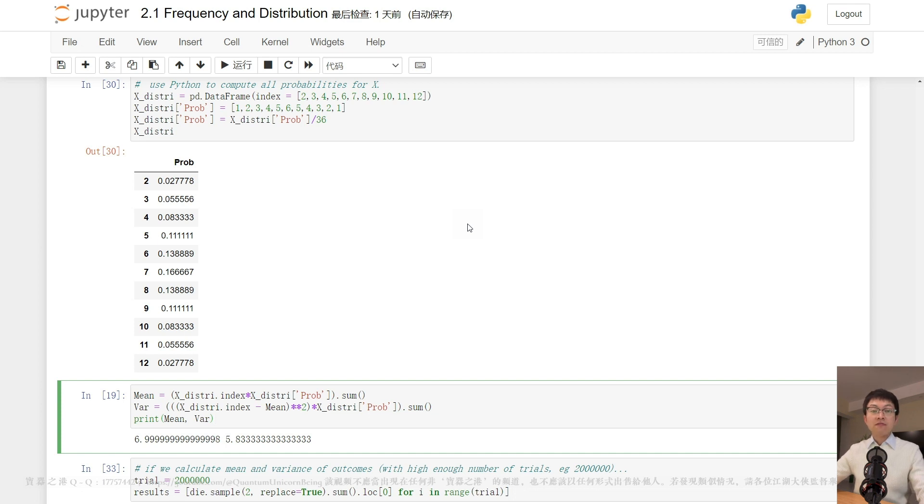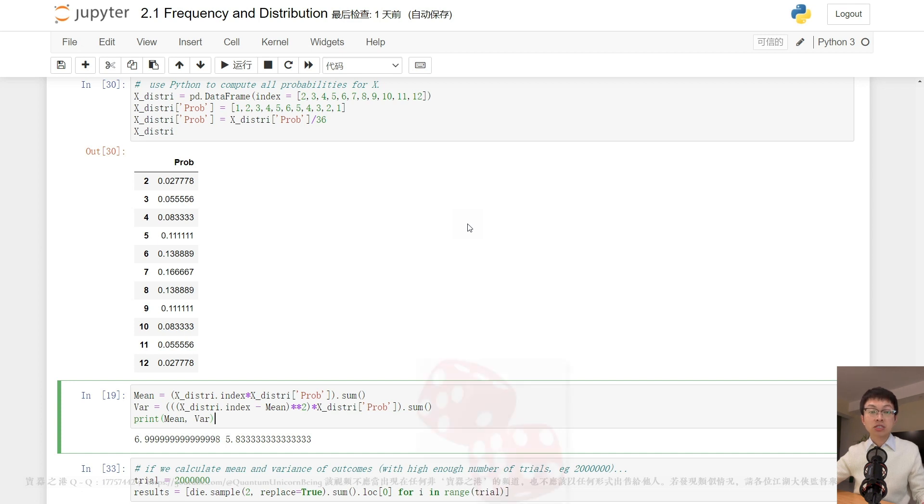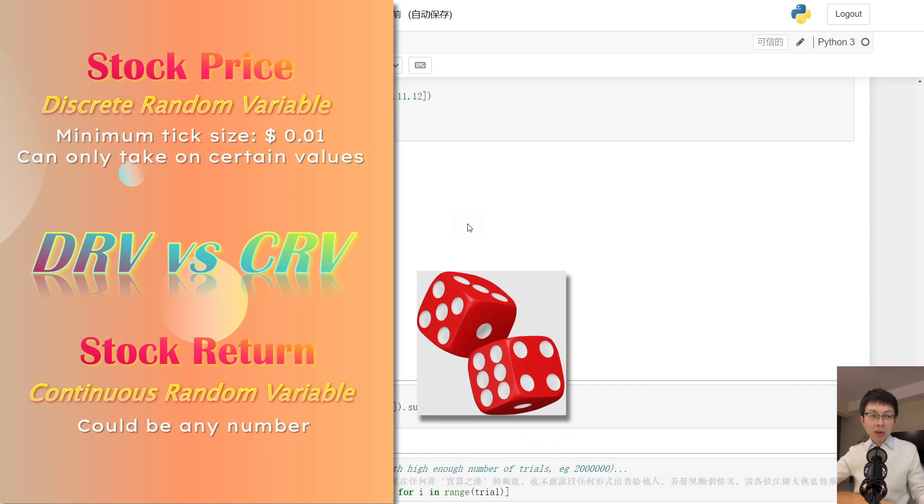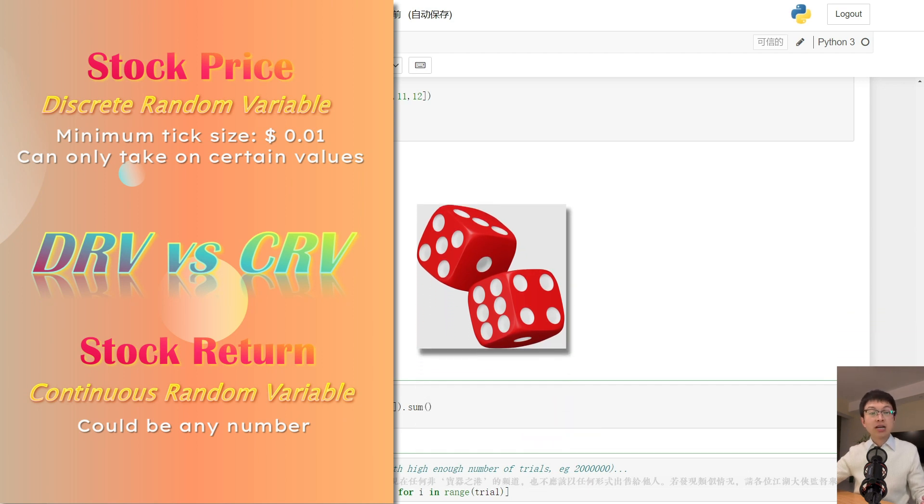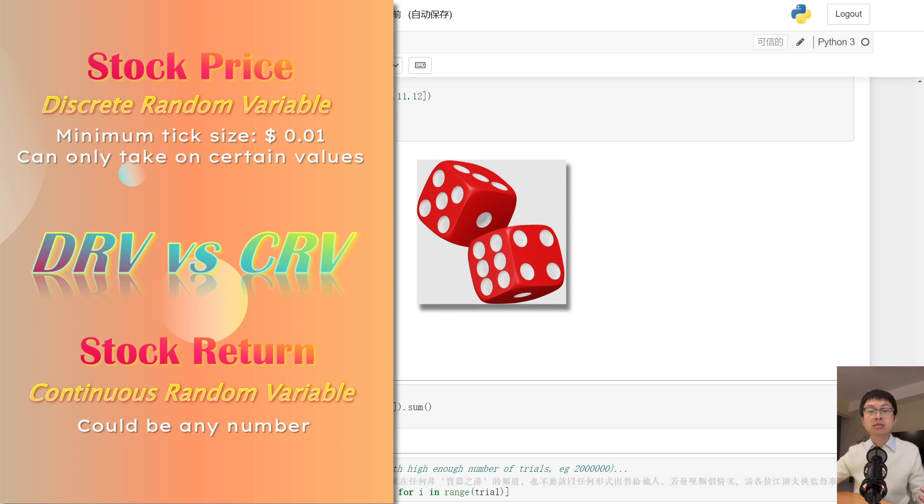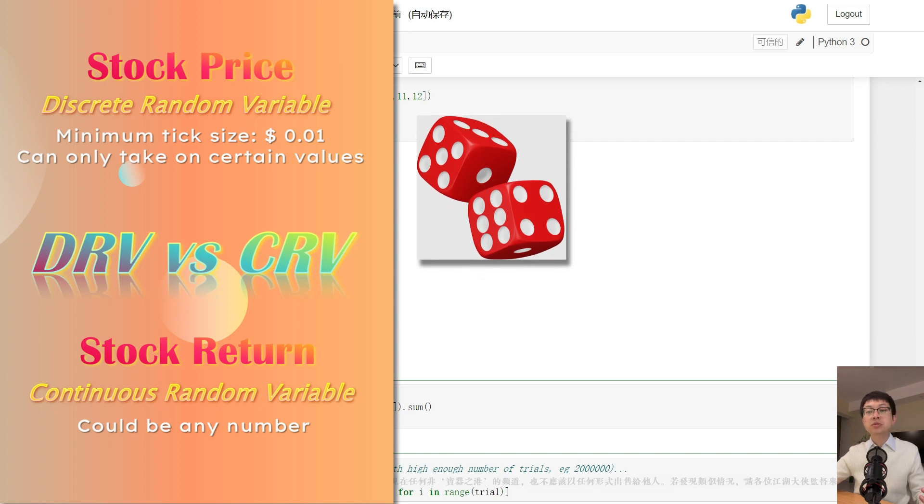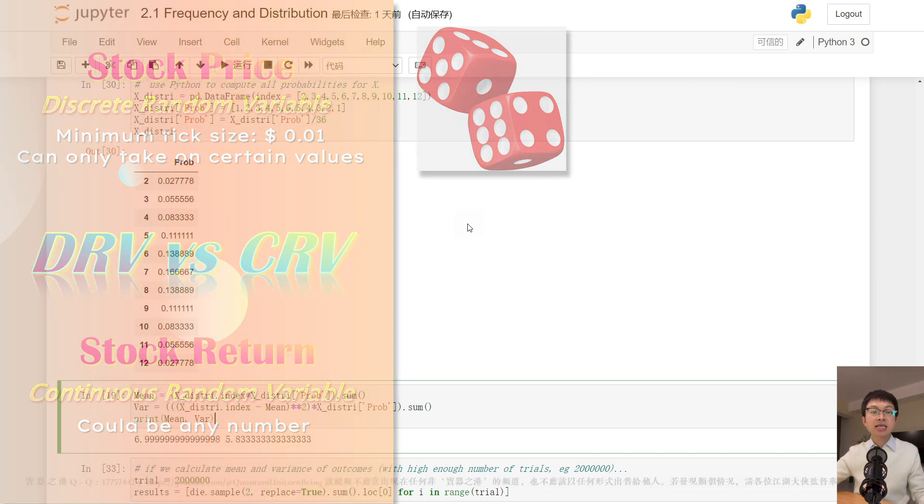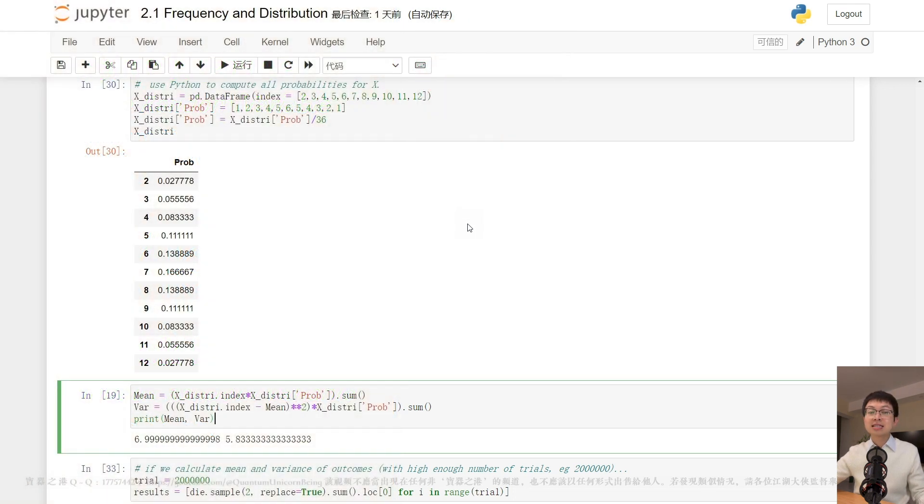Returning to the field of finance, we require continuous random variables since the distribution of stock return is continuous. It is impossible to directly observe the actual distribution of stock return as opposed to the die scan. Nevertheless, are there any reliable distributions that can adequately describe the data return? Sure.